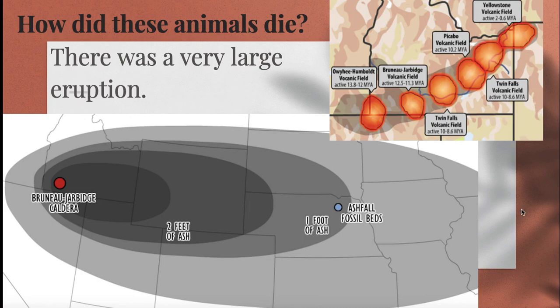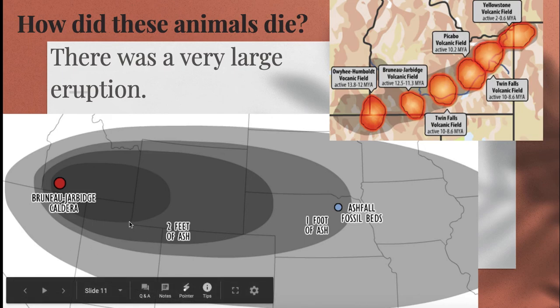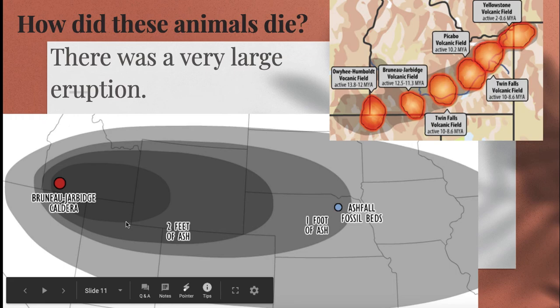A lot of questions come up as we discuss this: if the eruption 12.5 to 13 million years ago killed a bunch of living things and covered a large part of the United States in ash, could that happen again? The short answer is yes, it could. We do monitor Yellowstone very thoroughly currently, so we'd probably know when that's happening, but there really would be no way to stop it.